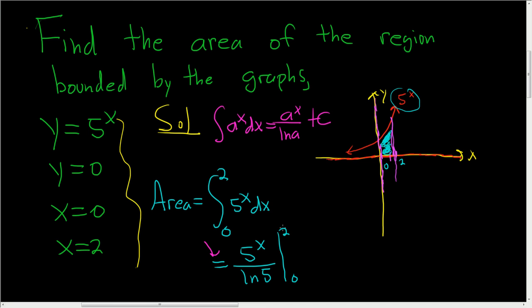So now we have a definite integral we've integrated. We first plug in the 2, so we get 5 squared over the natural log of 5, minus, and then we plug in the 0, so 5 to the 0 over the natural log of 5.